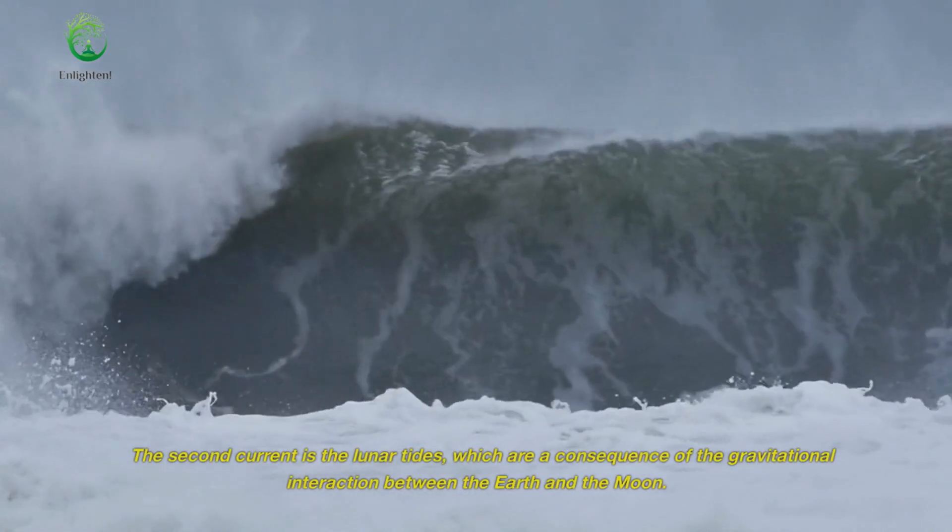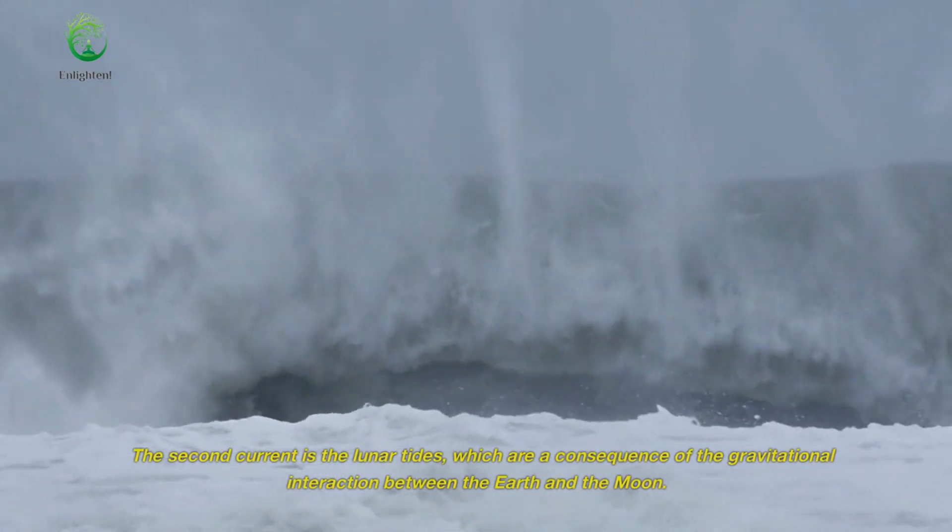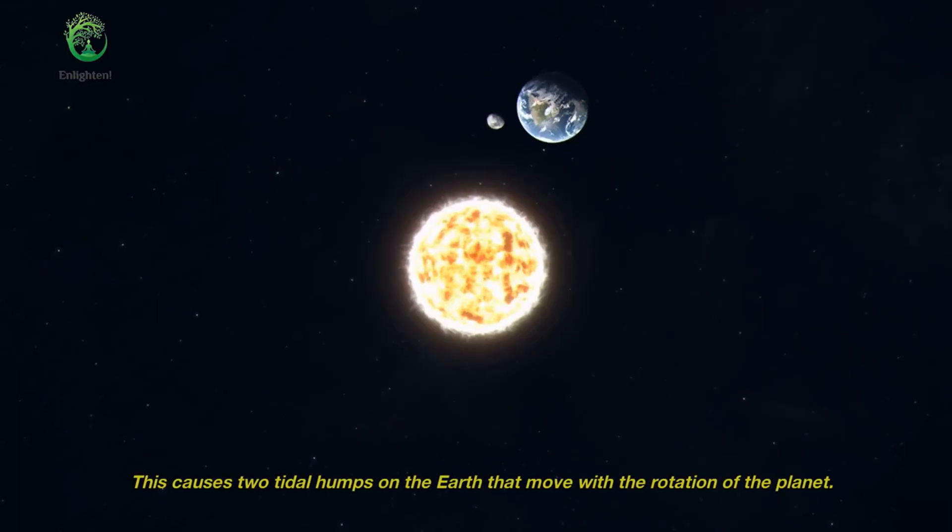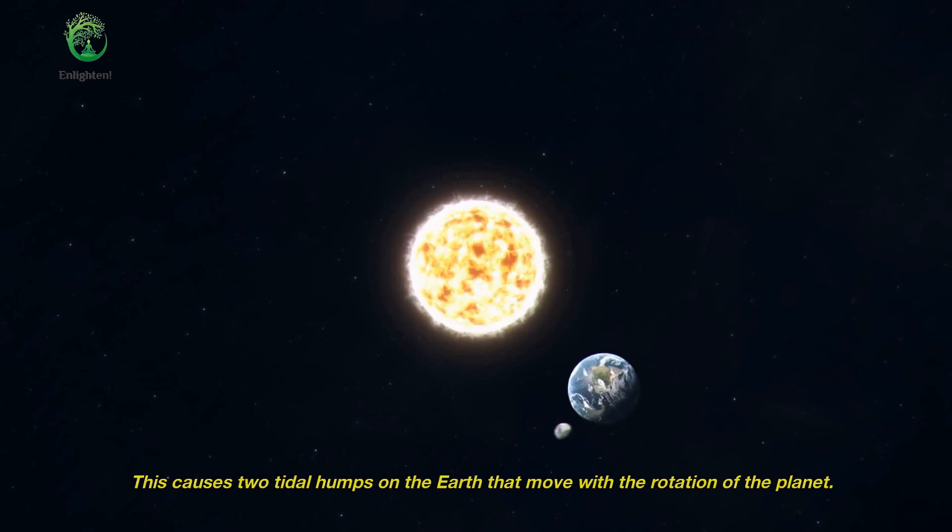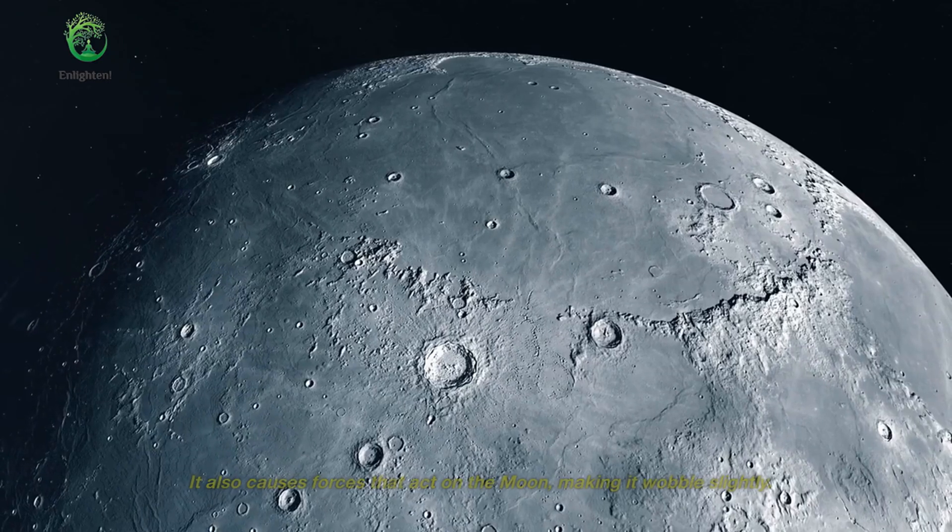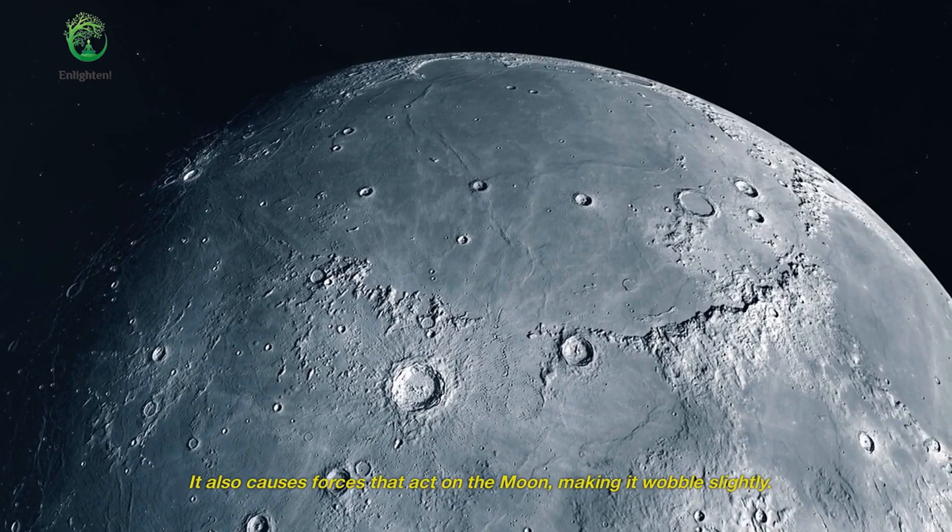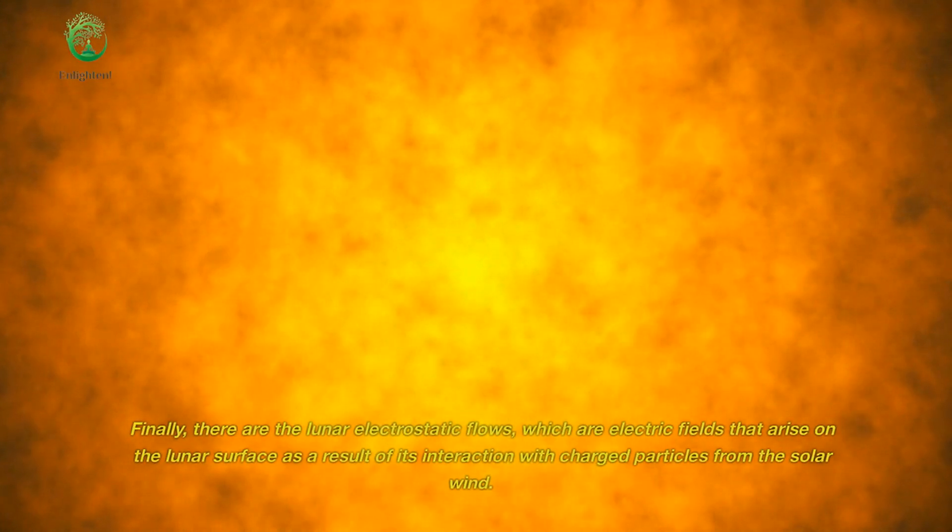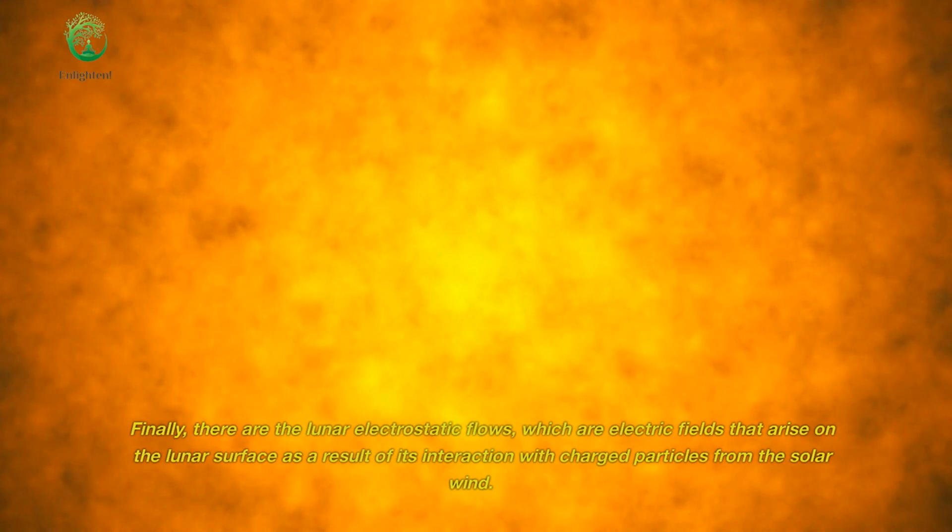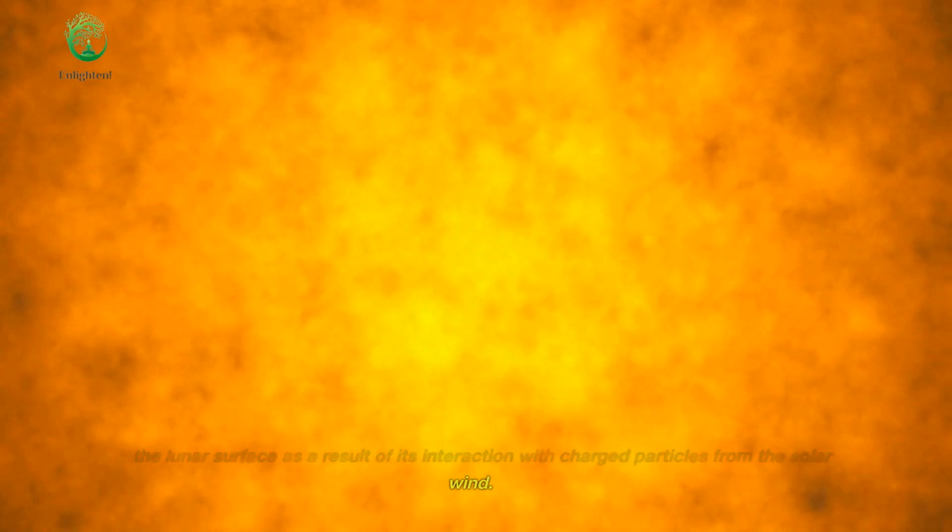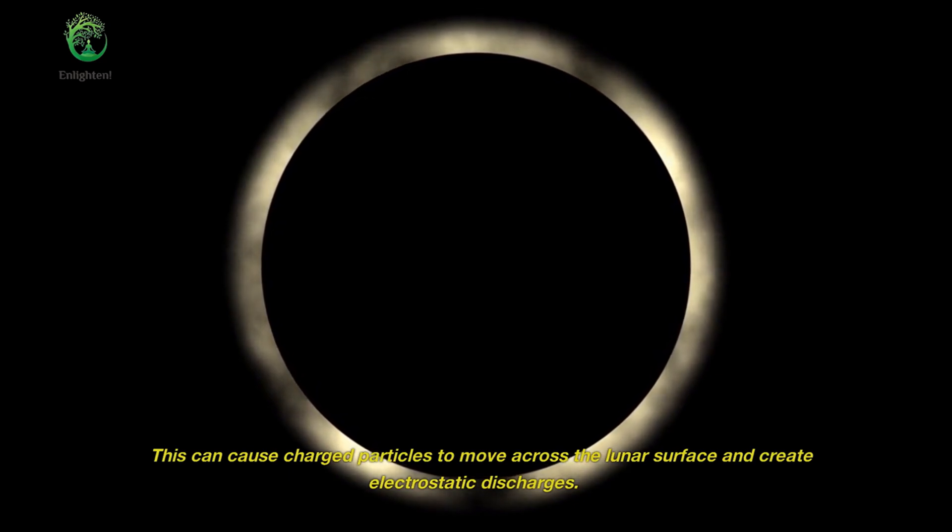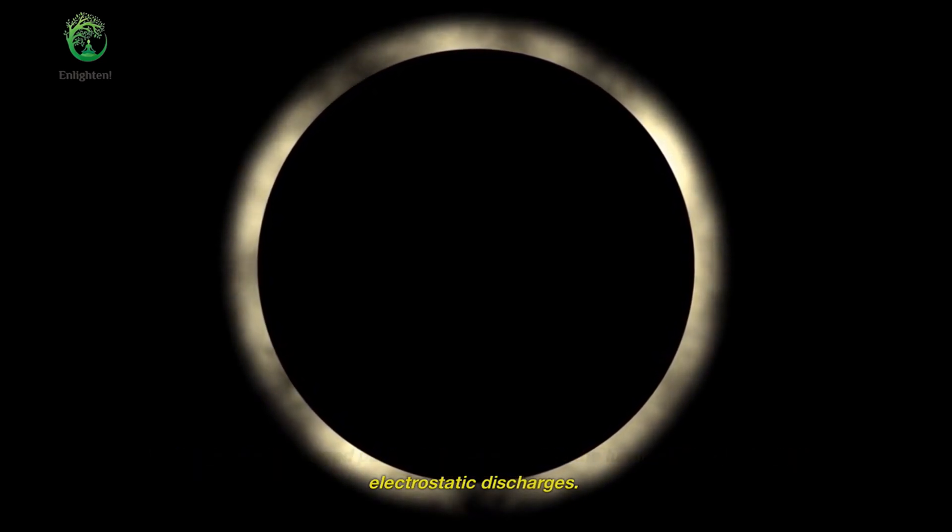The second current is the lunar tides, which are a consequence of the gravitational interaction between the Earth and the Moon. This causes two tidal humps on the Earth that move with the rotation of the planet. It also causes forces that act on the Moon, making it wobble slightly. Finally, there are the lunar electrostatic flows, which are electric fields that arise on the lunar surface as a result of its interaction with charged particles from the solar wind. This can cause charged particles to move across the lunar surface and create electrostatic discharges.